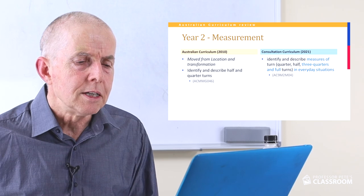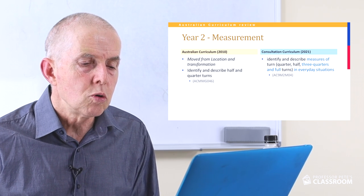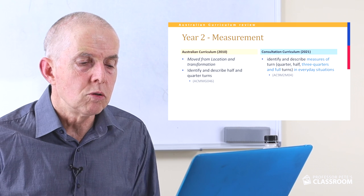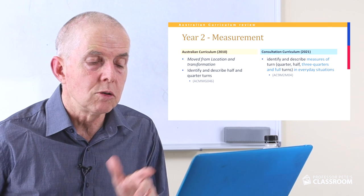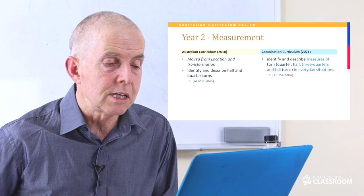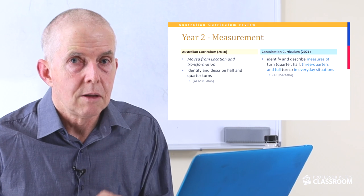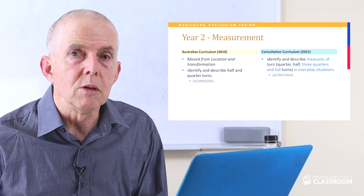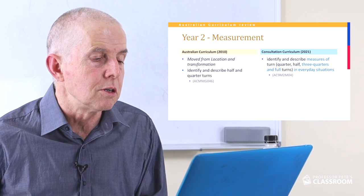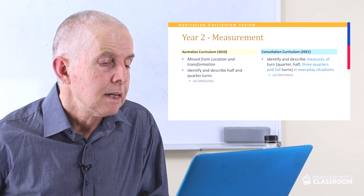Measurement descriptor four: identify and describe measures of turn — quarter, half, three-quarter and full turns in everyday situations. Three-quarter turns, full turns and the phrase measures of turn have all been added. These are all valuable additions. This content has been moved from location and transformation and expanded, which I think is a good thing.